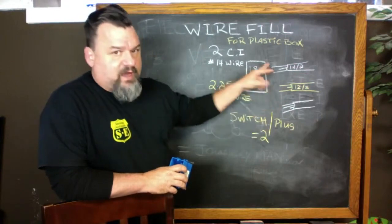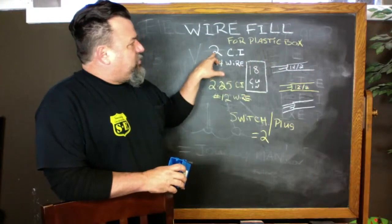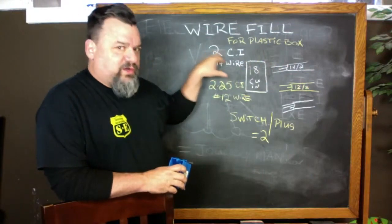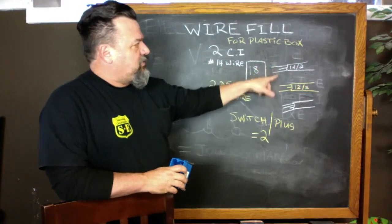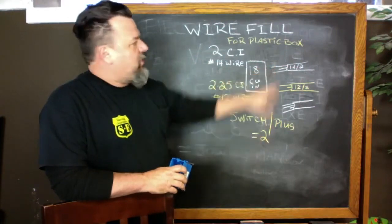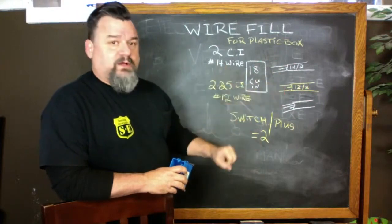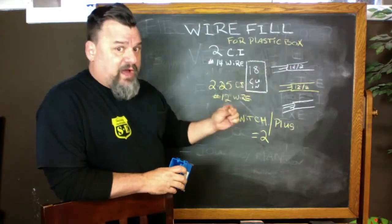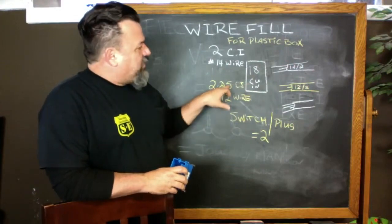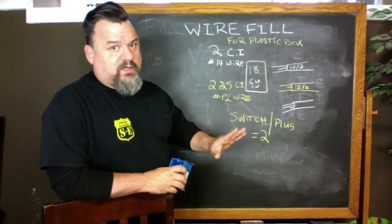For the 14-2, number 14 gauge wire, each wire is rated at two cubic inches. Black wire's two, white wire is two, we'll talk about the grounds here in a second. Now the 12-2, they're a little bigger so they're gonna take up more volume, right? So they're two and a quarter inches a piece.